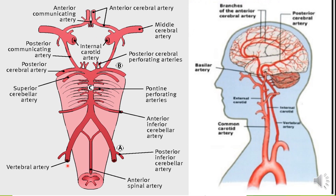The posterior circulation is supplied by two vertebral arteries from both sides of the body. These vertebral arteries are branches of subclavian arteries. Each vertebral artery gives a branch called the posterior inferior cerebellar artery on both sides. Both arteries continue and join together to form one single common artery called the basilar artery.